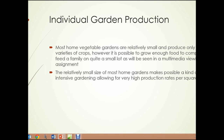Most home vegetable gardens are relatively small and produce only a few varieties of crops. However, it is possible to grow enough food to completely feed a family on quite a small lot, and you will see that in one of the multimedia viewing assignments for this unit. The relatively small size of most home gardens makes possible a kind of intensive gardening that allows for very high production rates per square foot. Individual gardens are often far more productive per square foot than large commercial farms.